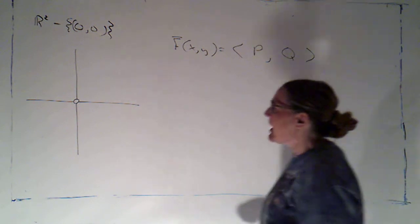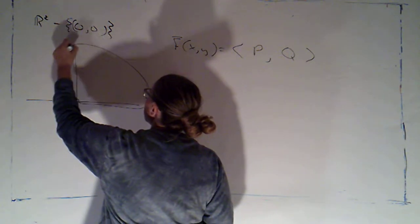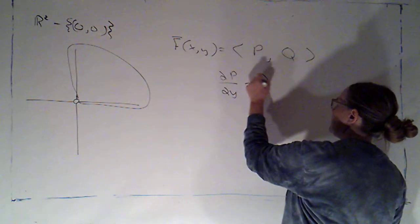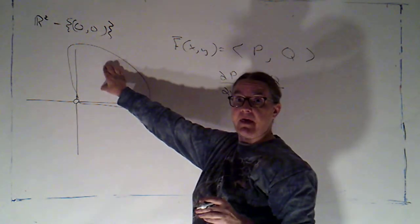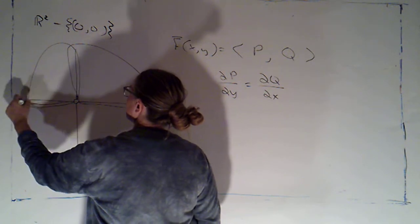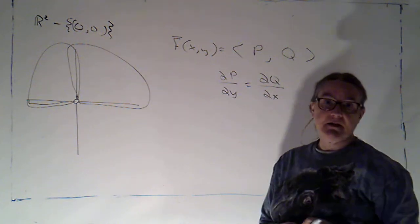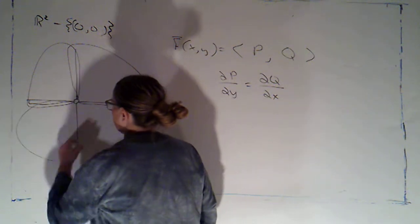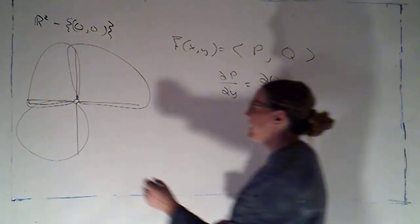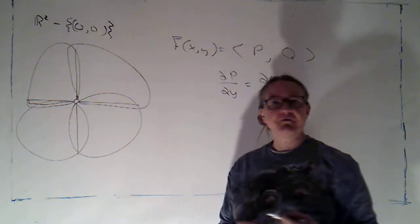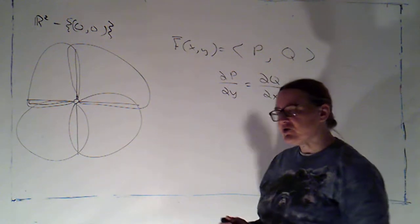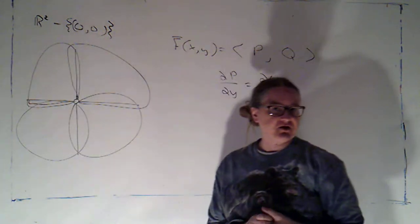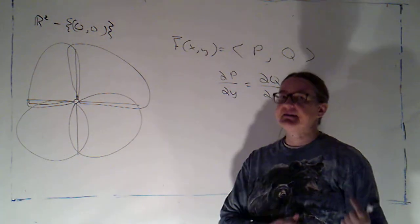If you think about it, if I look at just this region right here, that's simply connected. So if the partial of p with respect to y equals the partial of q with respect to x, I'd be able to find a potential function on that region. And that region there is also simply connected — I'd be able to find a potential function there. I'm breaking it into four quadrants, but the problem is I can't assume that the same potential function will work all the way around. There will be a potential function that works in each region, but it's not necessarily going to be the same one.